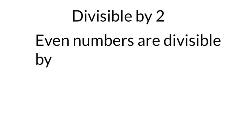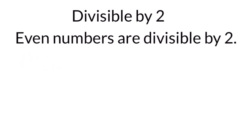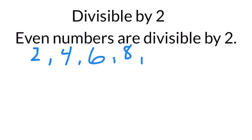Instead of actually dividing numbers to see if they're divisible, certain numbers have shortcuts. Divisible by two is the easiest. All even numbers are divisible by two, and you can recognize even numbers because they always end in the digits two, four, six, eight, or zero.